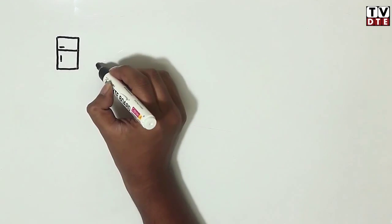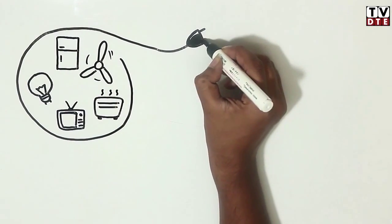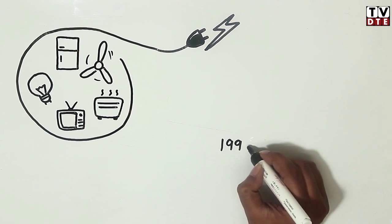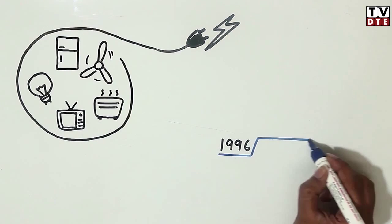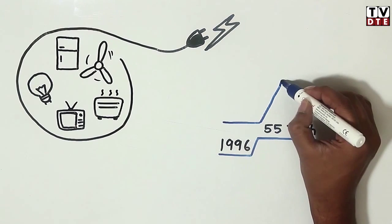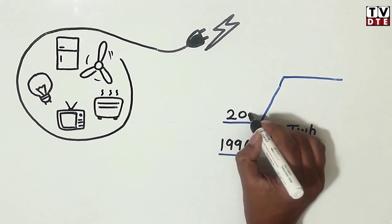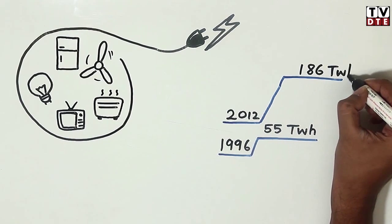Increase in household appliances and gadgets is a major reason for the burgeoning power demand in India. In 1996, Indian households consumed 55 terawatt hours of electricity. In 2012, this increased by 3.5 times to about 186 terawatt hours.